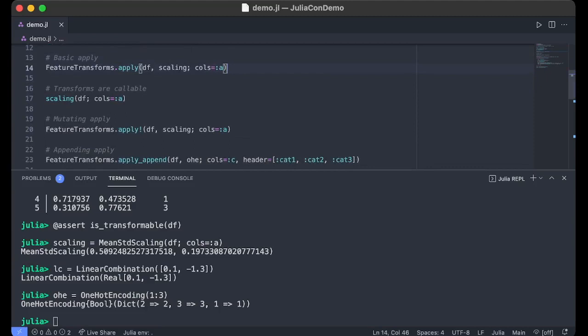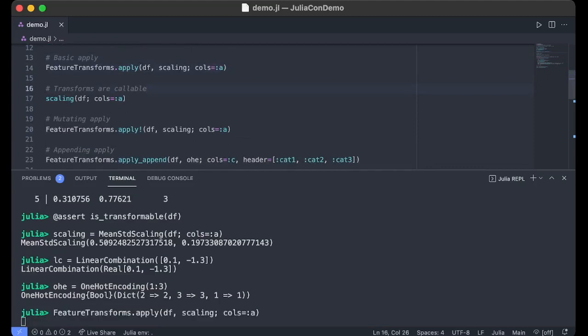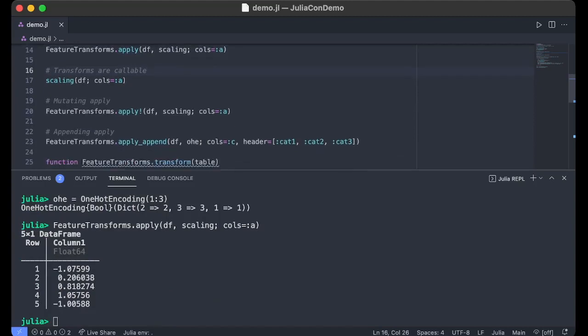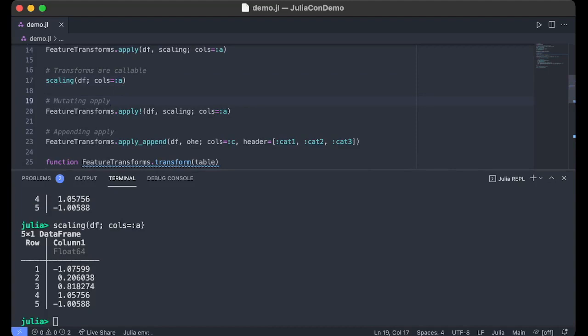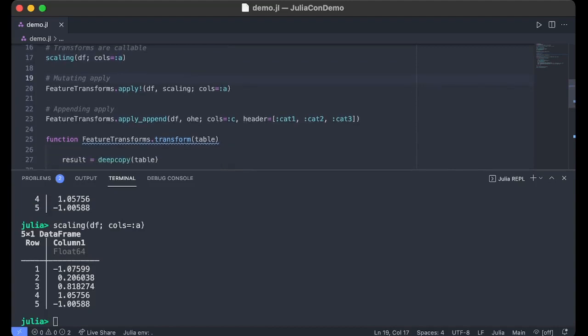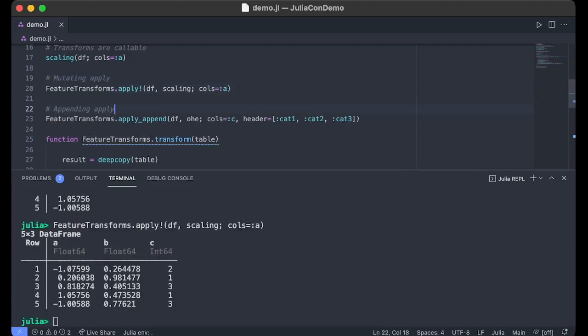There are a few ways we can operate on this table now. The first is a generic apply method, which just returns the result of the transform on the data we selected. But note that transforms are also callable, so this is equivalent to doing that. The second is to mutate data directly, if the transform types allow. And finally, you can append the result of applying directly to the table or the array, again, if this is compatible with the types.